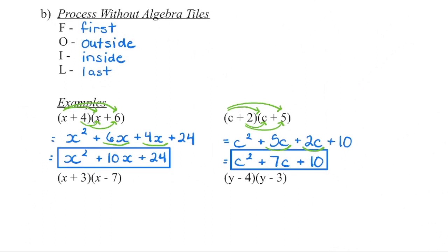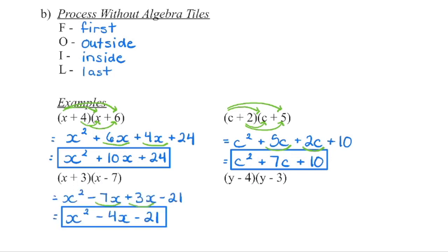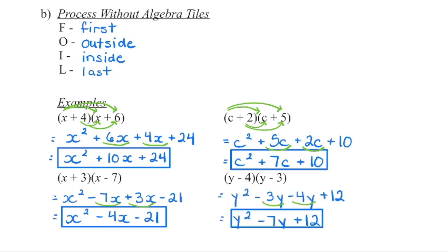In our next two examples, we have a binomial times a binomial. So x times x is x squared, then minus 7x plus 3x minus 21. Write that out and combine like terms — it's fully simplified when there are no more like terms. Similarly, y times y is y squared, then negative 3y minus 4y, and a negative times a negative is positive 12. Combine any like terms together.